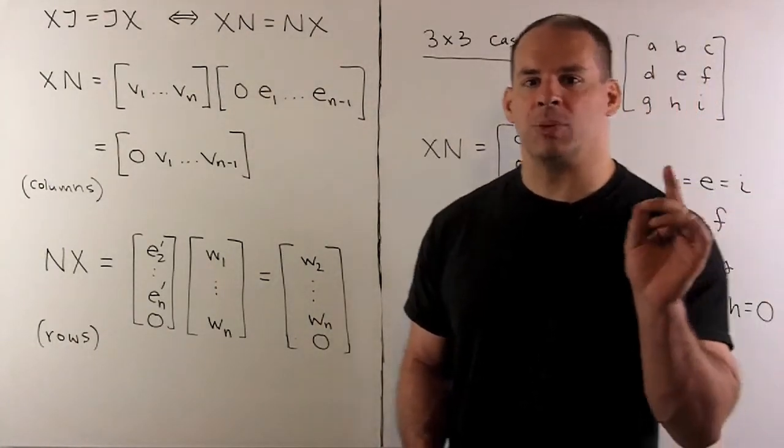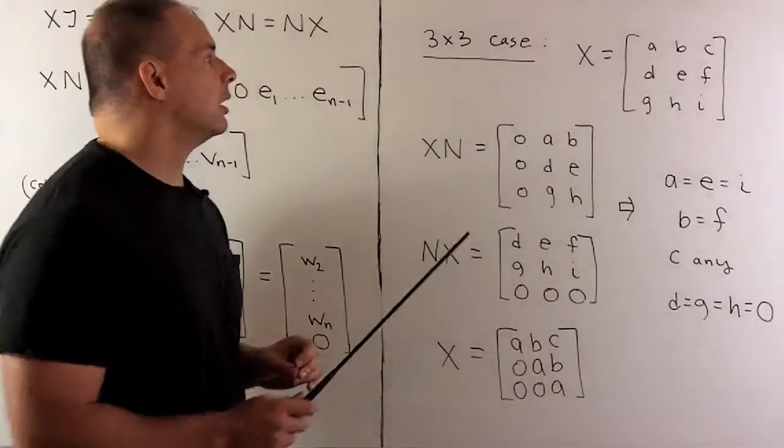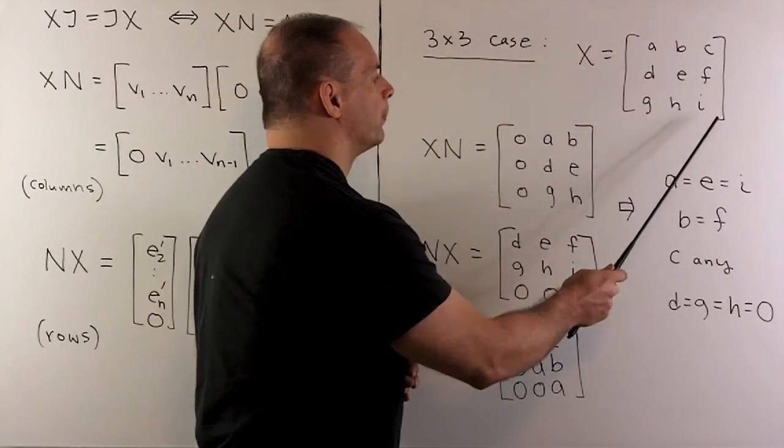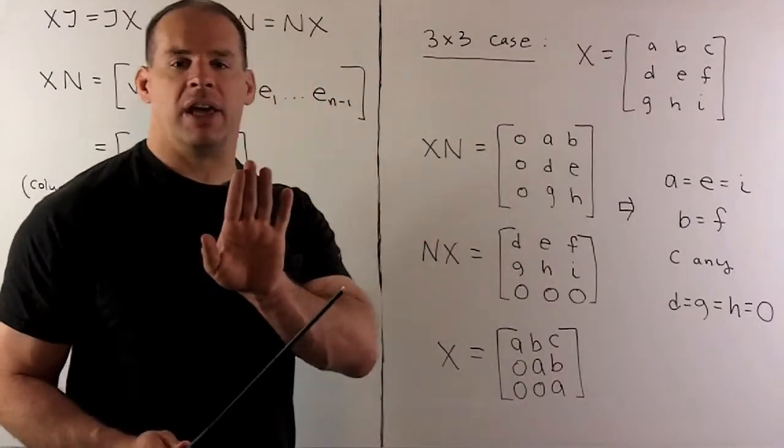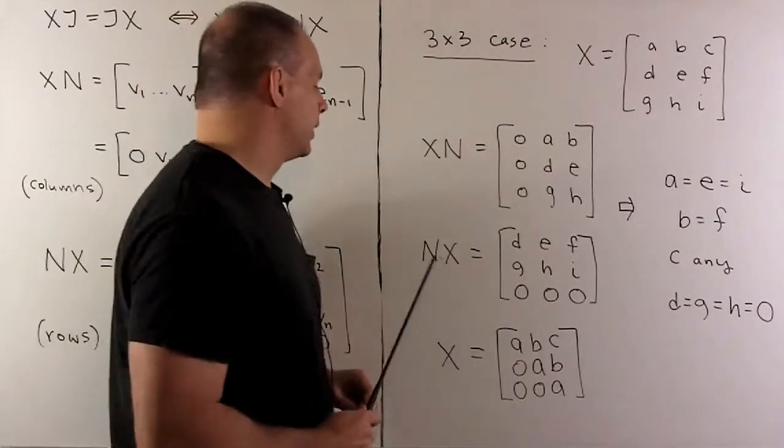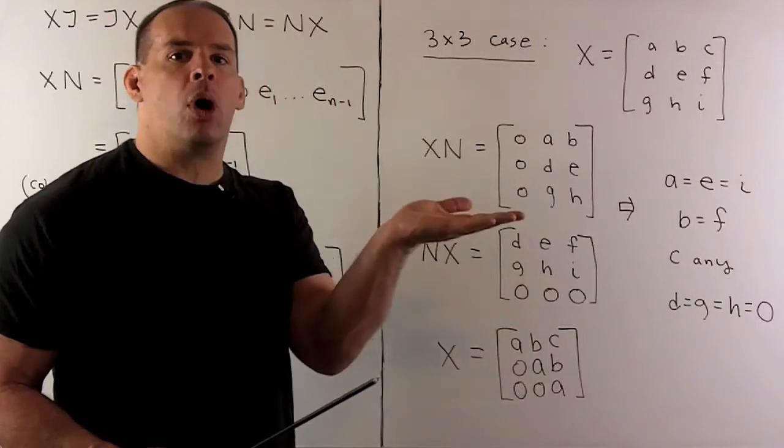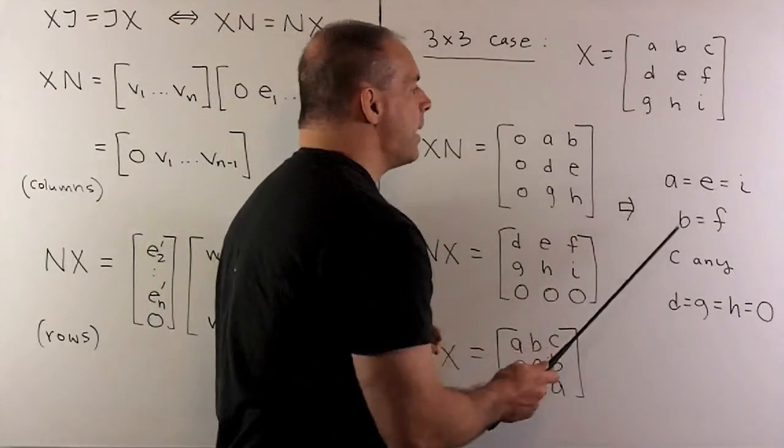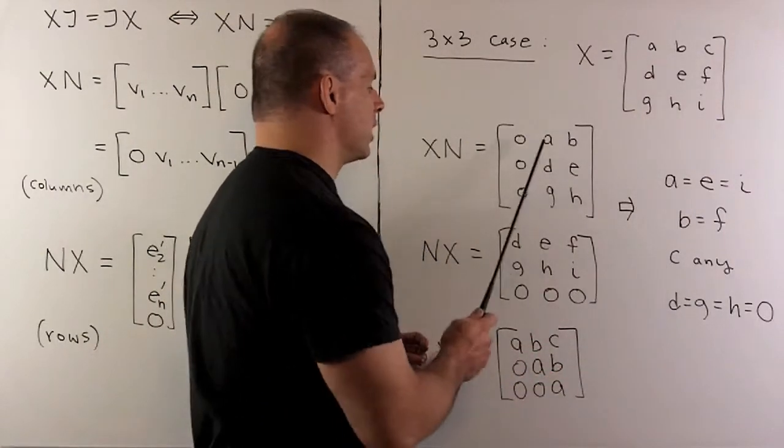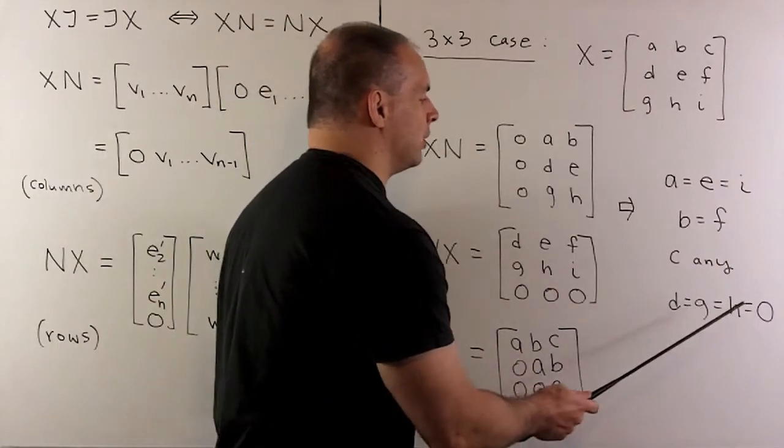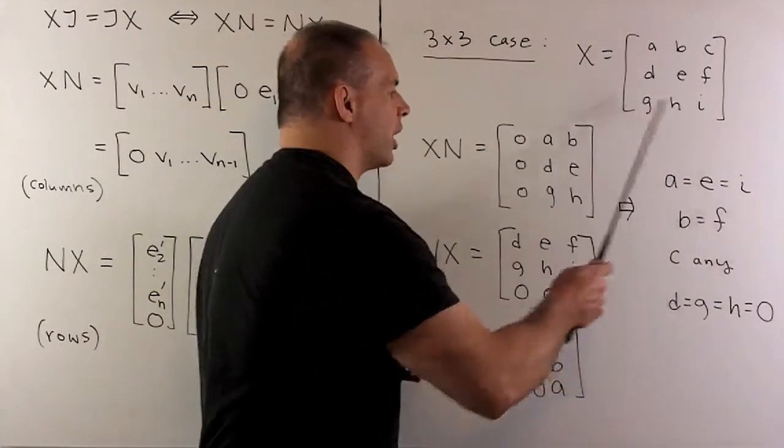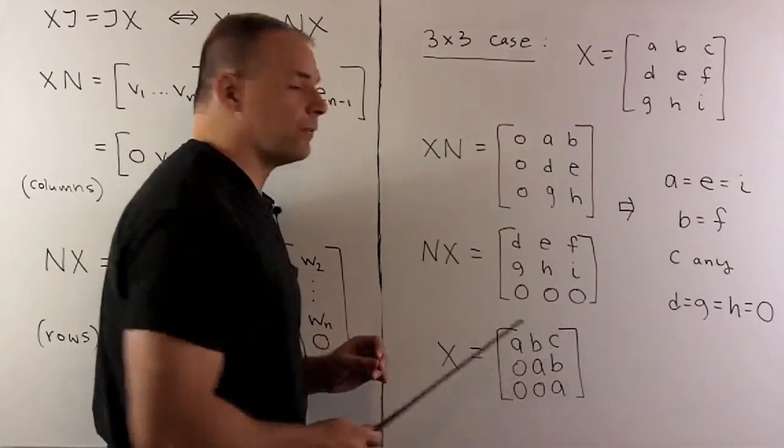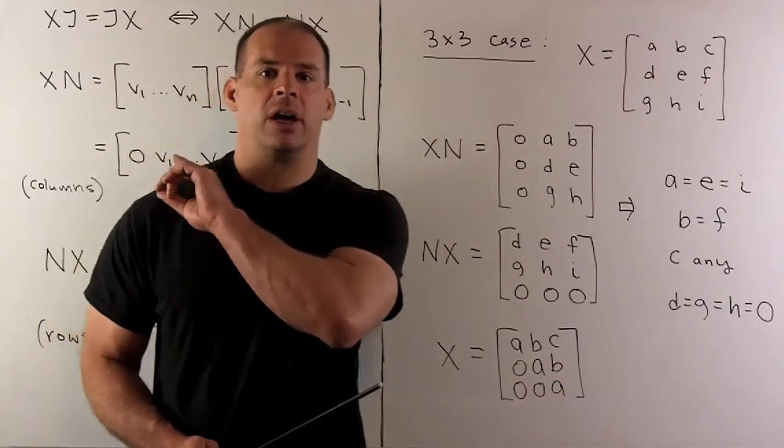Now, let's just check it out explicitly in the 3x3 case. So let's suppose I have our matrix X, okay, entries A, B, C, all the way up through I. X times N shifts everything to the right by one. N times X shifts everything up by one. When we set these two equal to each other, what do we have? We'll have A equals E equals I, B equals F. C can be anything, since it doesn't appear in either matrix. Then I have D equals G equals H equals zero. When I put this all together, we wind up getting this matrix here for X. And we note, it's on the form that we noted before. So the statement over here is at least believable.